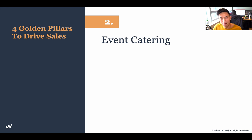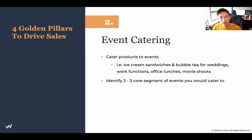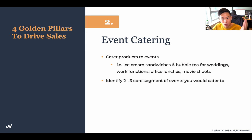Number two, the second pillar is event catering — catering products to events. For us: ice cream sandwiches and bubble teas for weddings, work functions, office lunches, and movie shoots. These are all great opportunities where people find real value in offering something like ice cream sandwiches and bubble tea as incentives for their team. Identify two to three segments of events that you would cater to because you need to actively attack them and reach out. If I were to target movie shoots, I'd reach out to all production companies in my area — cold call, email, drop by — day after day.